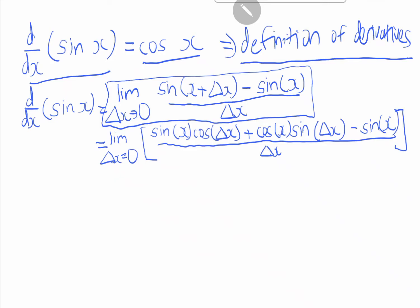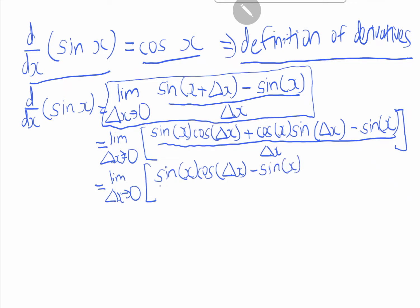Now let's further simplify by splitting it into two components. As you can see, the first and last terms both have sin x, so we can bring sin x to one side. This gives us: sin x cos(delta x) minus sin x, over delta x, plus cos x sin(delta x) over delta x.